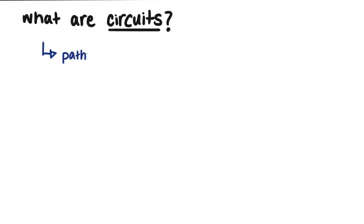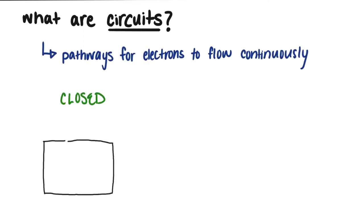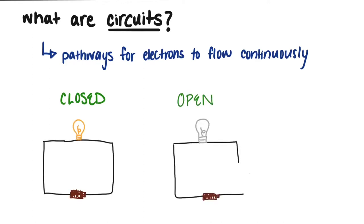So what are circuits? A circuit is a pathway for the electrons to flow continuously. A circuit can be closed or it can be open, but only when it's closed is the flow of the current possible. When the circuit is open, there's a break somewhere in it and the flow isn't continuous. However, this is actually useful to us and we'll come back to this later.